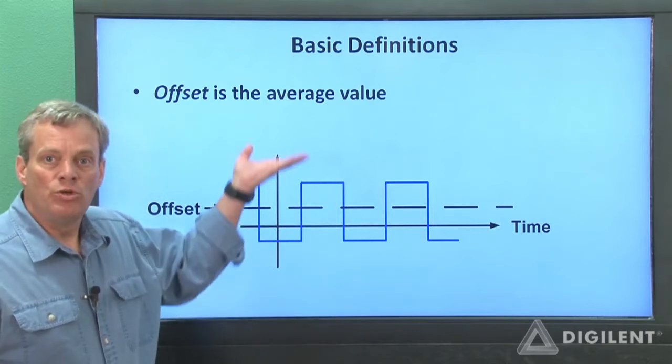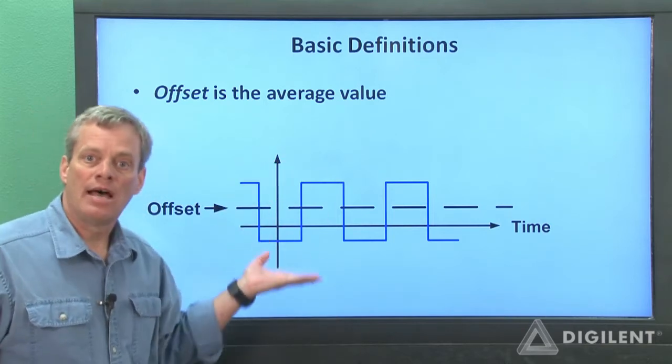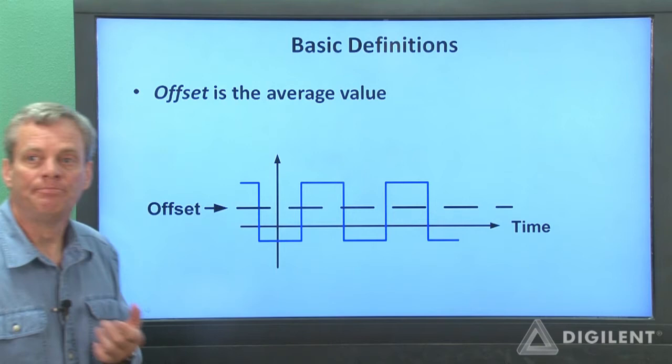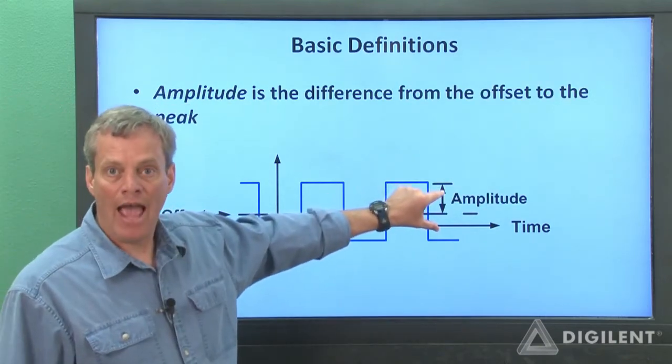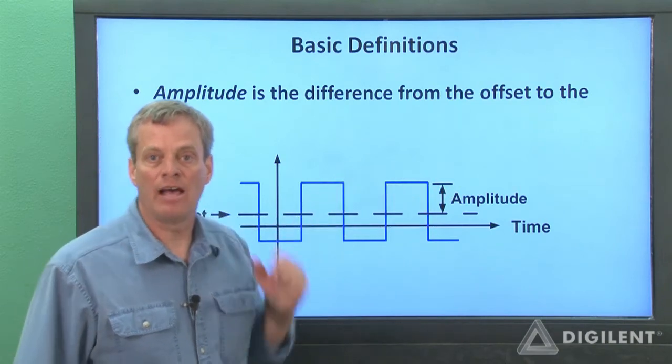The offset of a signal is simply its average value. An offset simply moves the entire signal up and down along the vertical axis. The amplitude of a signal is the vertical distance between the average value and its peak value.